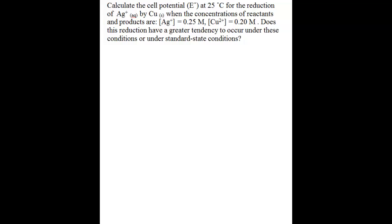Hi, this is Sonia Doucette. In this video I'll show you how to calculate the cell potential under non-standard conditions when you know the standard cell potential. For this problem you're asked to calculate the cell potential at 25 degrees Celsius for the reduction of silver by copper when the concentrations of reactants and products are as shown.